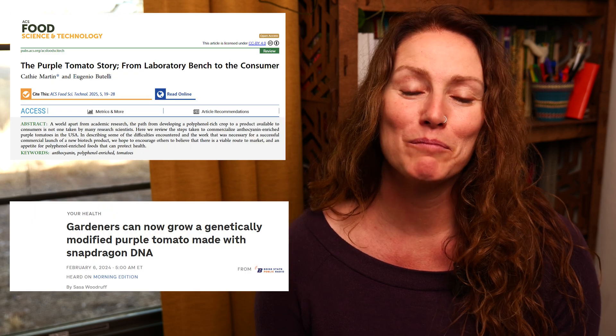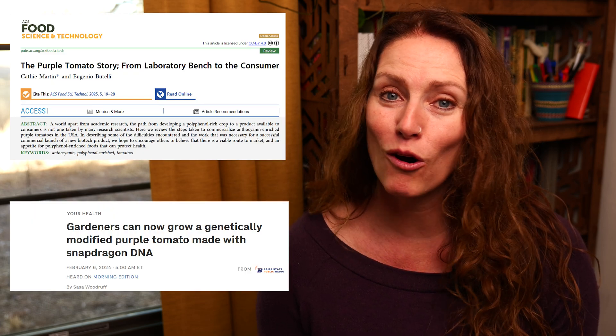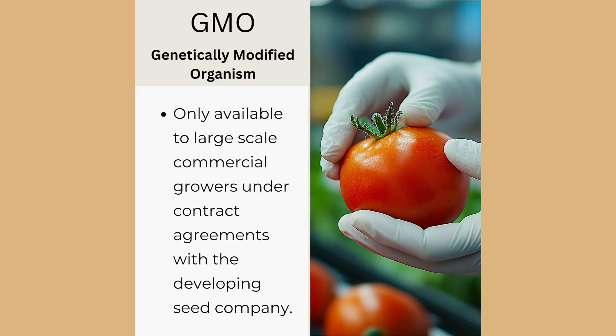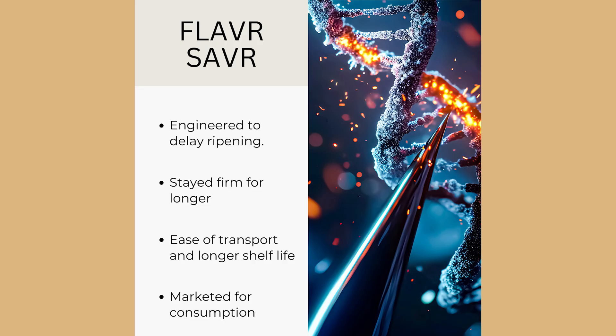GMO seeds have been developed with certain characteristics in mind but have not been available to home gardeners until recently. In 2024, the purple tomato became the first GMO seed released to home gardeners. Historically, GMO seeds have been exclusively available to large-scale commercial growers under contract agreements with the seed company. Before that, the Flavor Saver was the very first genetically modified fruit available to consumers starting in 1994 — engineered to delay ripening by inhibiting an enzyme that causes softening. It was discontinued in the late 1990s due to high production costs and consumer skepticism.